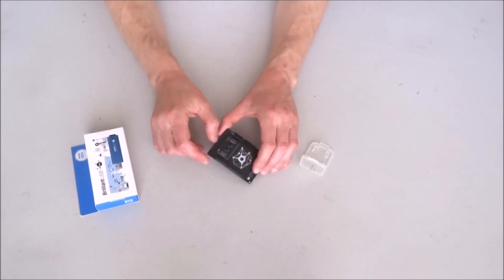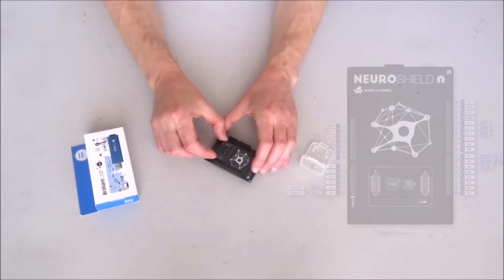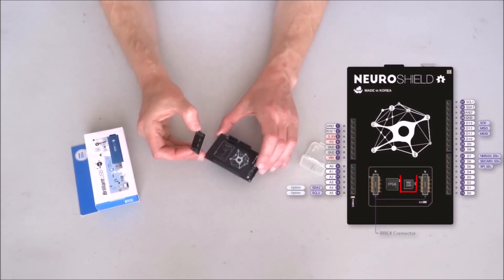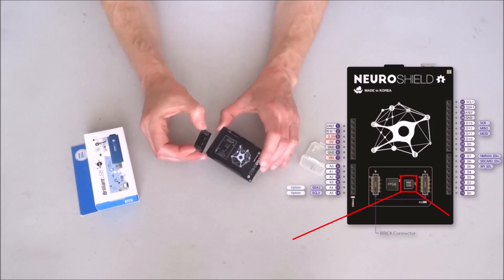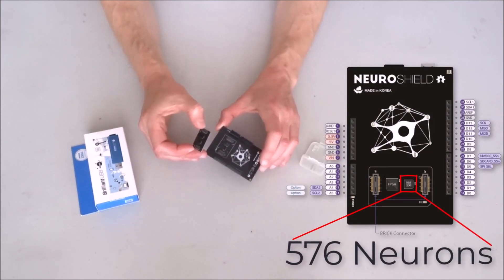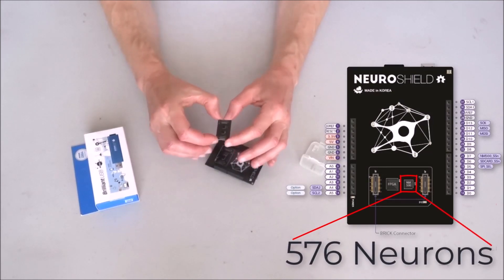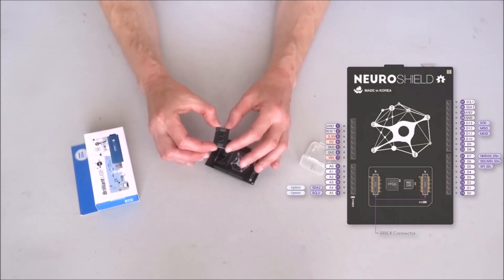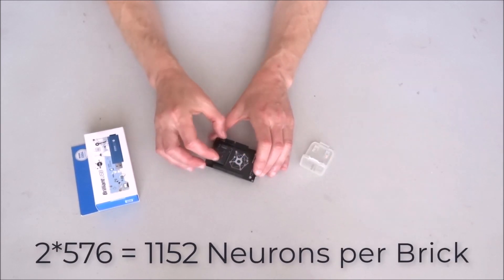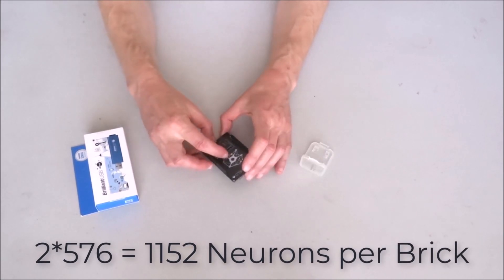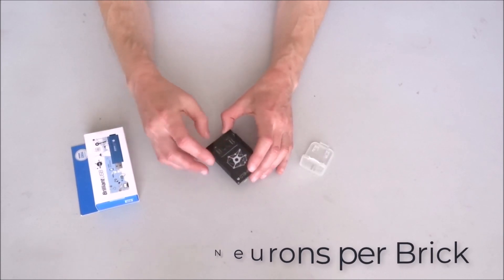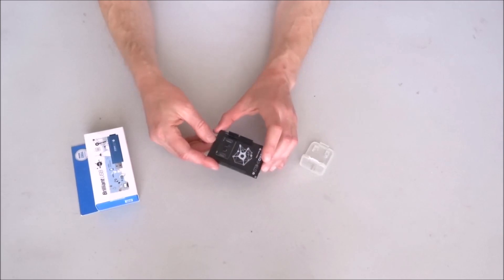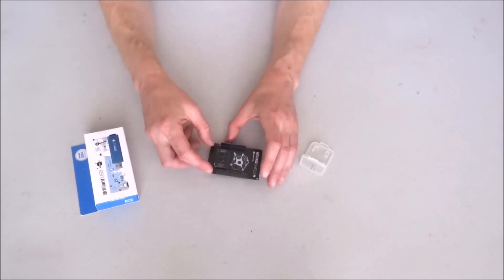And then if you need more neurons, you can take another brick and install it on top of this one. Actually, I believe the shield itself has like 500 and something neurons. And each brick has two more chips, each adding 500 and something more neurons.